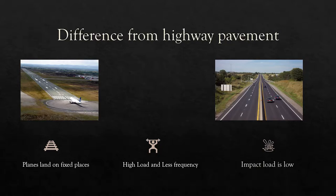First of all we will discuss how airport pavement is different from a highway pavement. The plane lands on fixed places on the runway, whereas in a road the vehicle may travel across the width of the highway. Airport runways have very high load — the load of the aircraft — but the frequency is much less than a regular highway. Impact load on the runway is also lower than highway pavement.